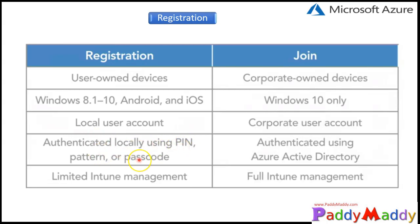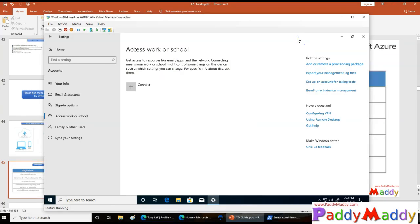For registered devices there is only a limited level of management capability available through Intune, whereas for joined devices you have full Intune management available. Intune is now completely changing its product name to Microsoft Endpoint Manager — MECM — which is a new naming convention. Microsoft Intune covers mobile device management as well as on-premises device management, allowing you to control applications, hardware inventory, patch management, and operating system deployment with the help of Autopilot.